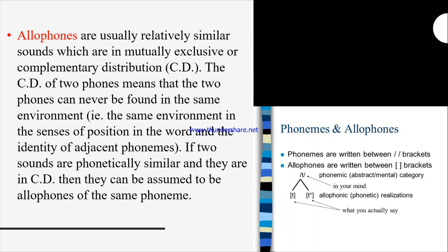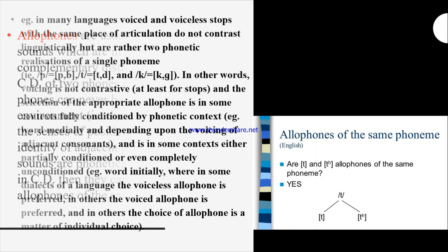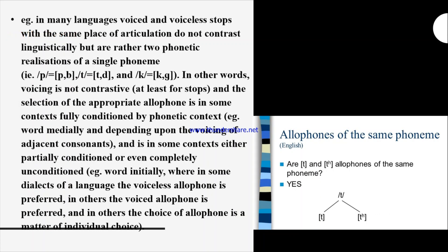If two sounds are phonetically similar and they are in complementary distribution, then they can be assumed to be allophones of the same phoneme. For example, in many languages, voiced and voiceless stops with the same place of articulation do not contrast linguistically, but are rather two phonetic realizations of a single phoneme.